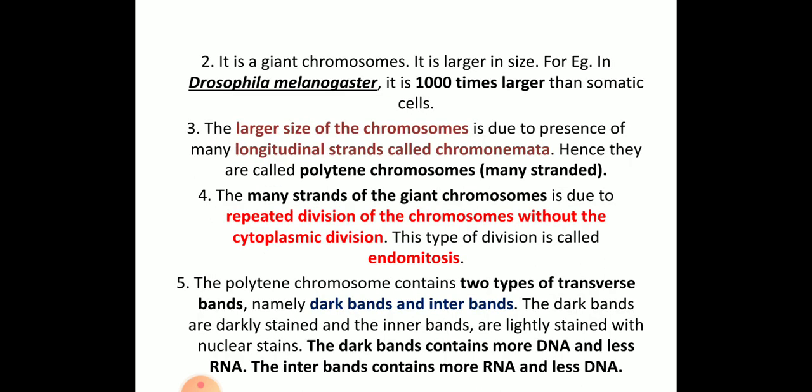Polytene chromosomes are giant chromosomes, much larger than somatic chromosomes — around 1000 times larger. This large size is due to the presence of longitudinal strands called chromonemata, which help in enlargement. They are called polytene chromosomes because 'poly' means many and 'tene' means strands — so polytene means many strands.